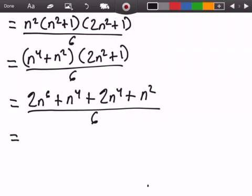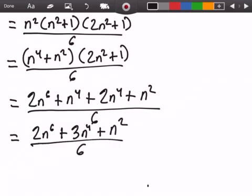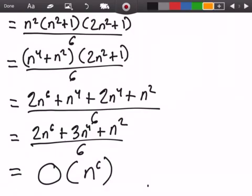This is equal to 2n to the sixth plus 3n to the fourth plus n squared all over 6. And this, of course, is just Big-O of n to the power of 6. So that's our answer in Big-O.